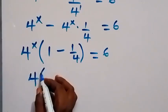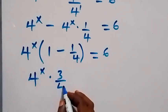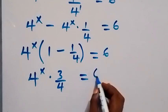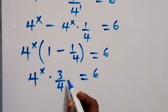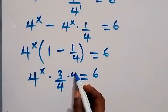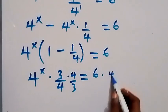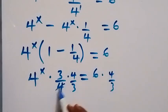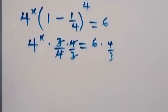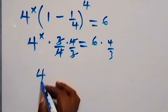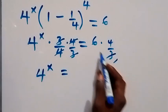So we have 4 raised to power x times 3 over 4, which now equals 6. Then we can remove the 3 over 4 by multiplying with 4 over 3 on both sides, so that these cancel out. We are left with 4 raised to power x equals — here we have 6 times 4 over 3, which gives 8.